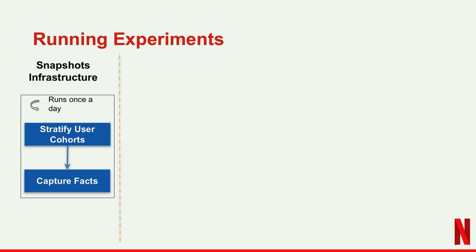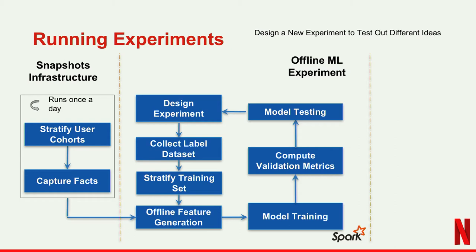We stratify what's called a set of user segments, or user cohorts. We collect a bunch of these different user sets and then capture raw data for them, often referred to as facts. When there is a new experiment that a machine learning engineer needs to work on, it's an iterative process. It starts with the design of the experiment, then the experiment needs its own label dataset. From the label dataset, you stratify an appropriate training set. The facts captured from the snapshot infrastructure are fed in as raw data, and we generate features out of them.